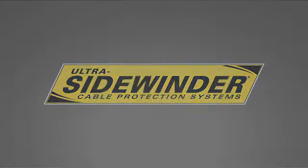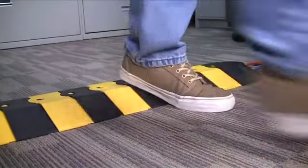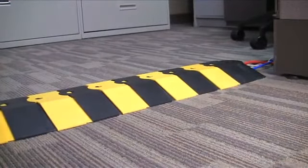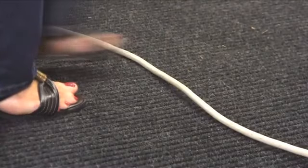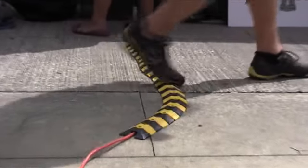The Ultra Sidewinder Cable Protection System solves these problems. The underside has space for multiple cables at once, eliminating the unsightly jumble. Tripping risk is minimized with the Ultra Sidewinder's tapered design that forces feet to slide over the top of the covered cables.